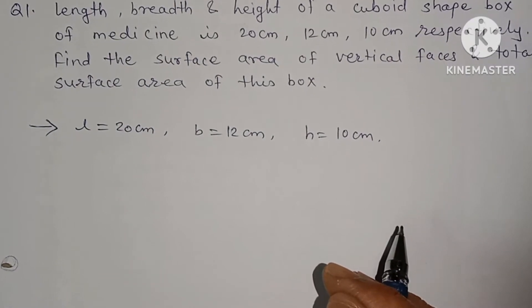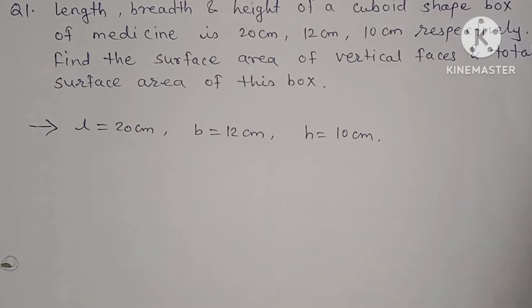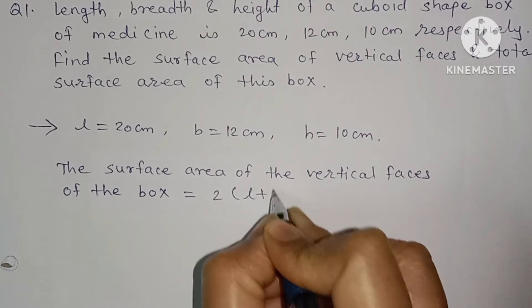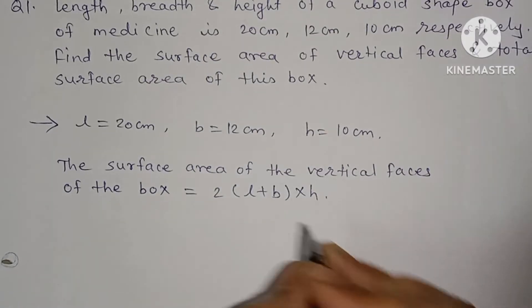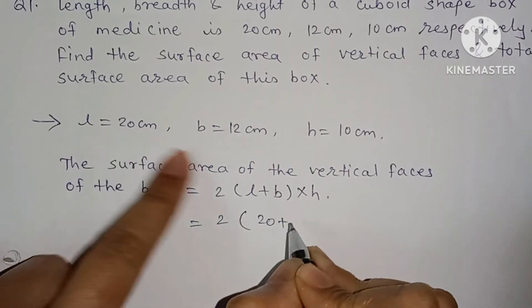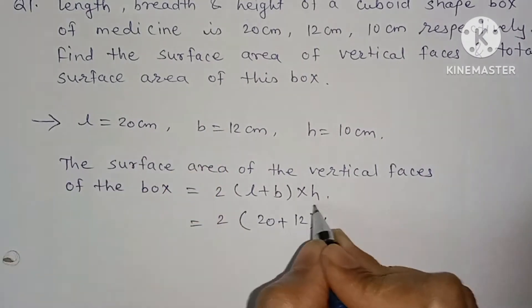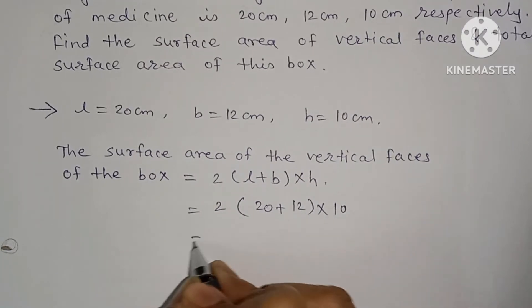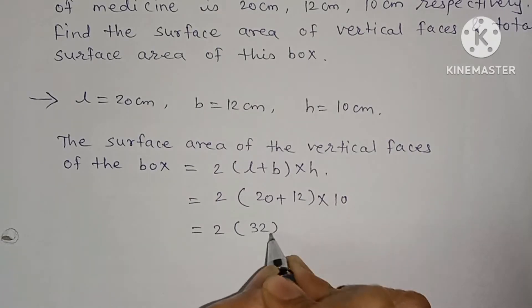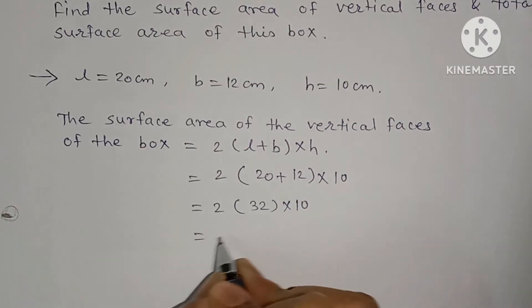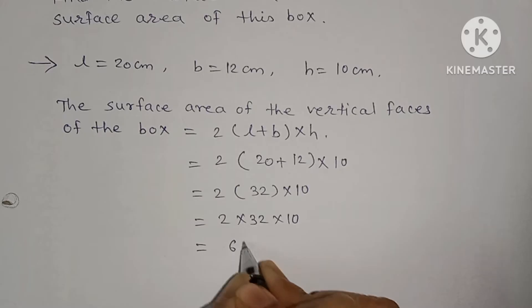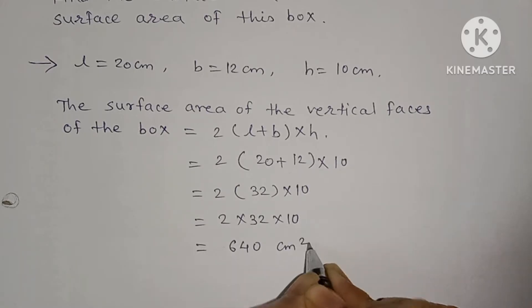Find the surface area of the vertical faces and total surface area of this box. The surface area of the vertical faces of the box is equal to 2(l + b) × h. Putting values: 2 × (20 + 12) × 10 = 2 × 32 × 10 = 640 square cm.